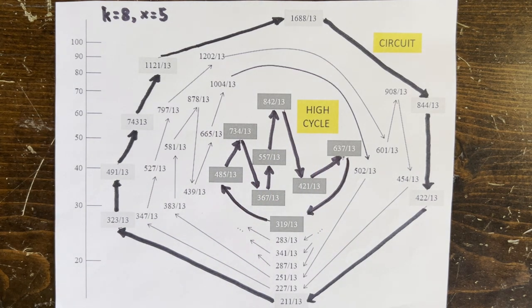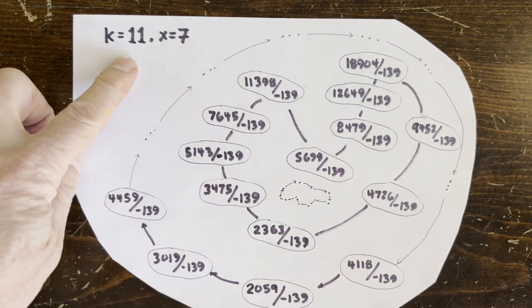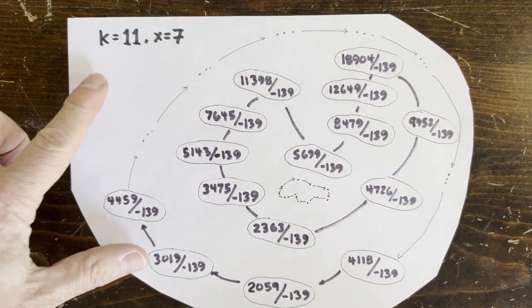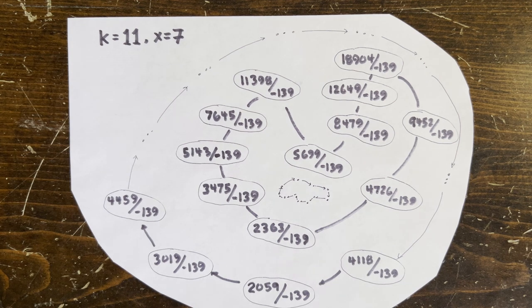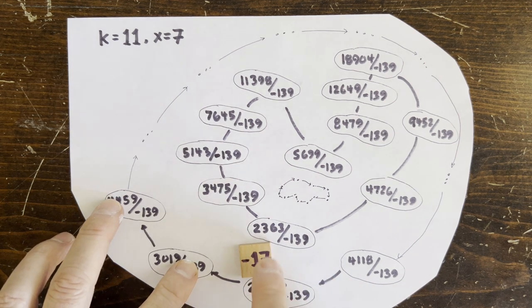Okay, so far so good. But if we look at the chart for k equals 11, x equals 7, and see that it has 30 loop shapes, one of these loops actually does contain integers. Right here.